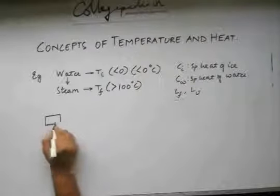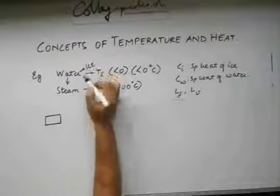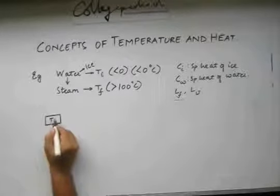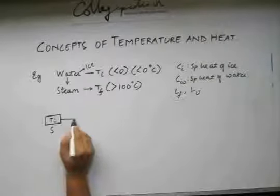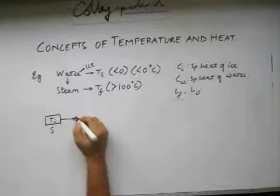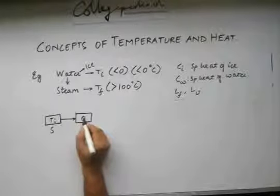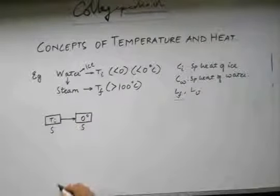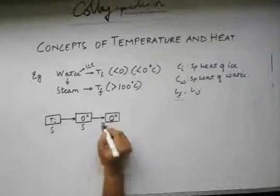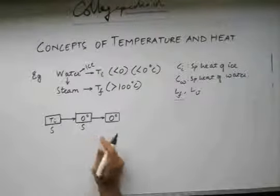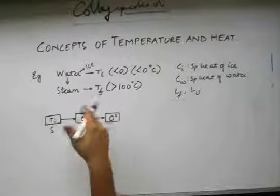We have ice at a temperature Ti — this is negative, this is solid. First, if we provide heat, this converts to ice at 0 degree Celsius, which is again solid. This ice now changes phase to liquid, which is again at 0 degree Celsius. Note that a phase change will not accompany any temperature change.